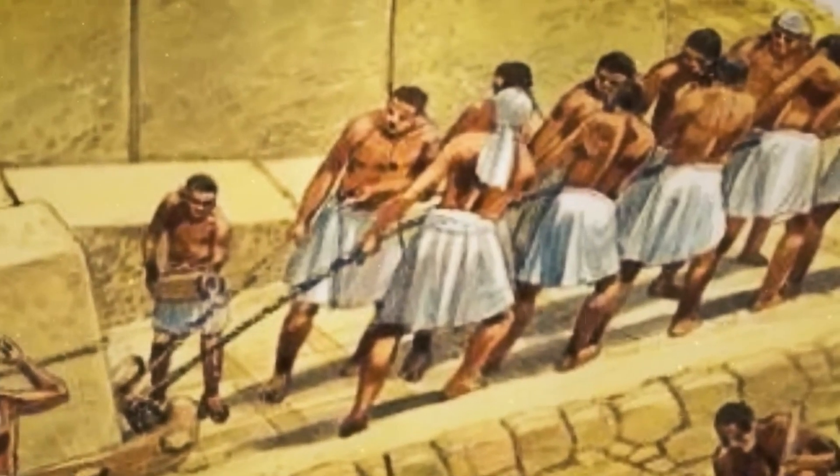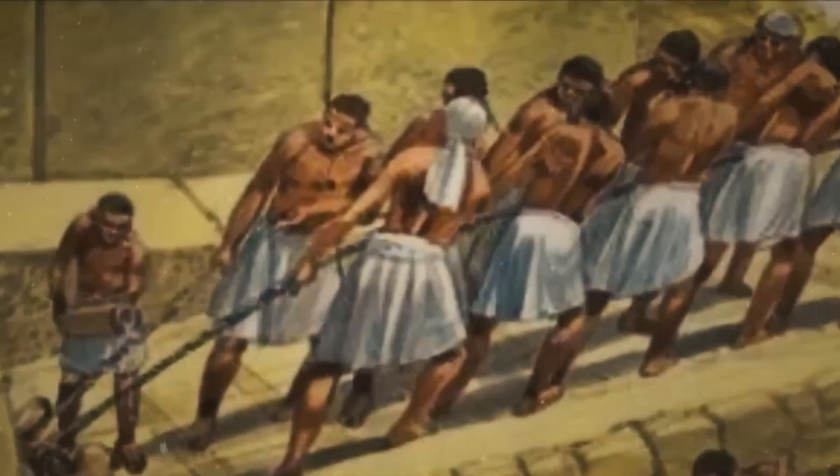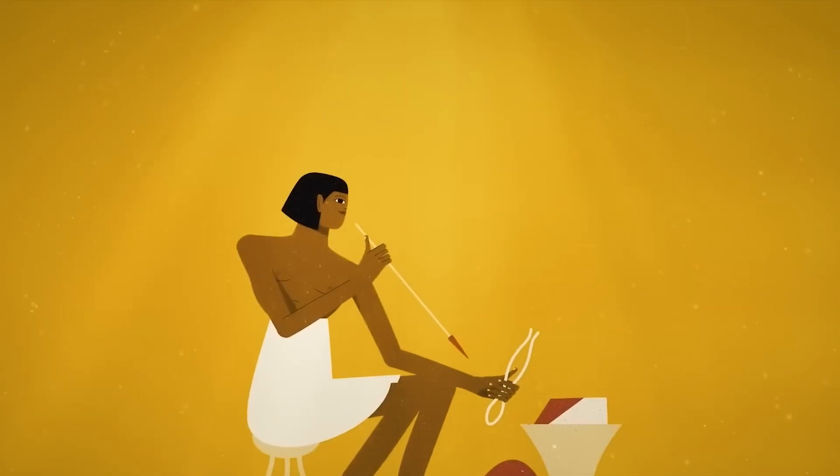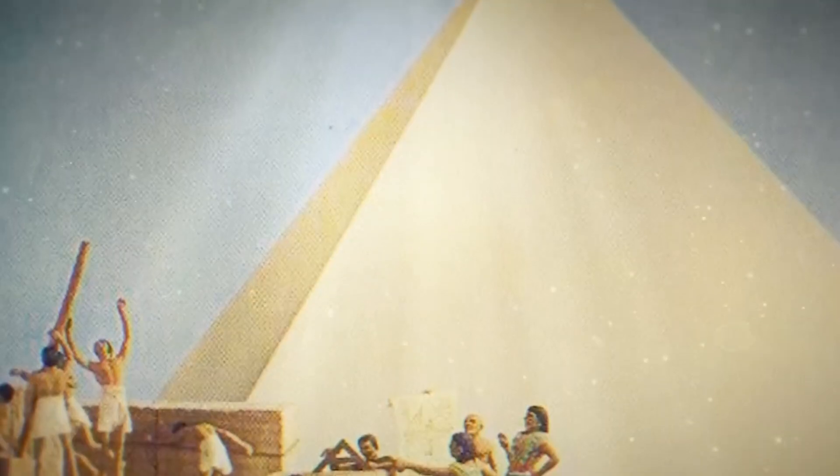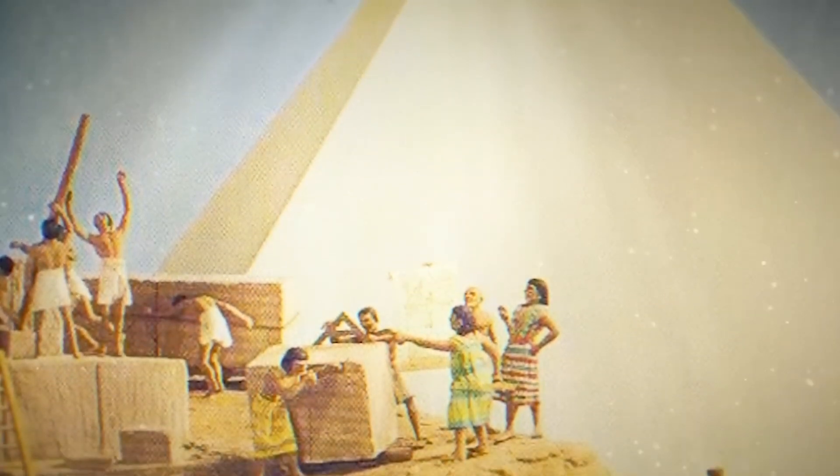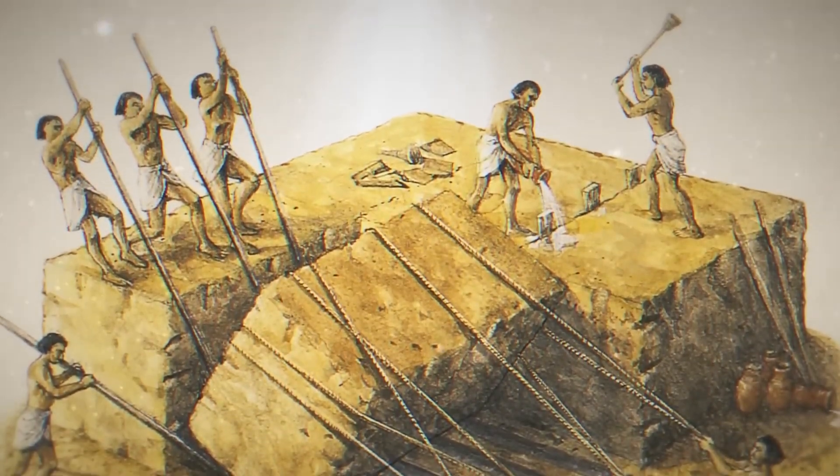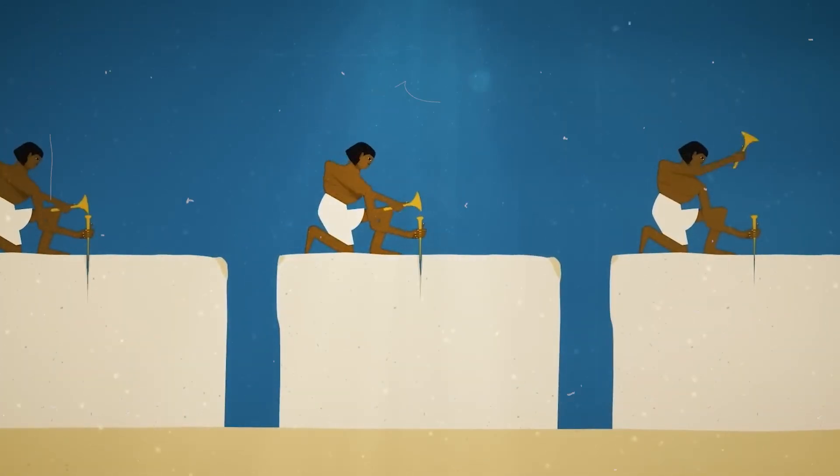In 2014, archaeologists found ancient papyrus scrolls at the Red Sea port of Wadi al-Jarf. These scrolls were written by Merrer, an overseer in charge of transporting limestone from Tura to Giza. His records showed that the stone was carried in boats along the Nile and then transported on sleds once it reached land.